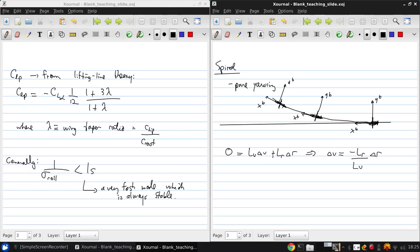If we put this into the last line, what we get is delta R dot equals NR minus NV times LR over LV times delta R. The eigenvalue associated with this system, since it's first order so it'll only be 1, is approximately given by NR minus NV times LR over LV, which can be written using the coefficients as QSB squared over 2 IZ u-naught times CNR minus CN-beta CLR over CL-beta.